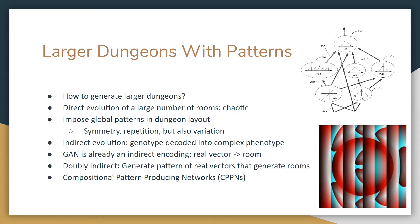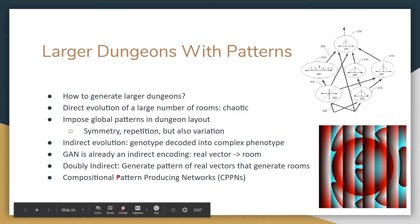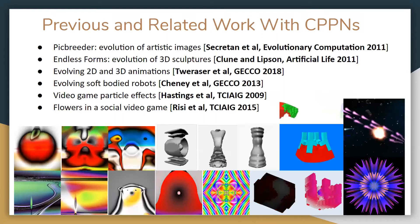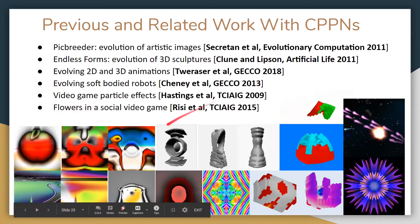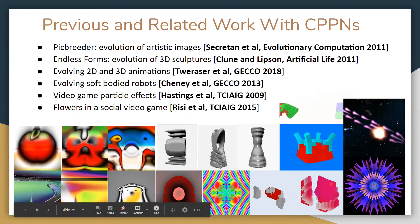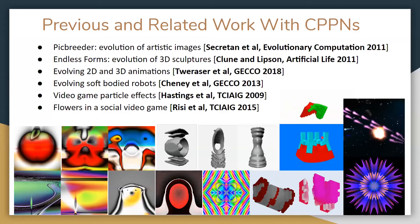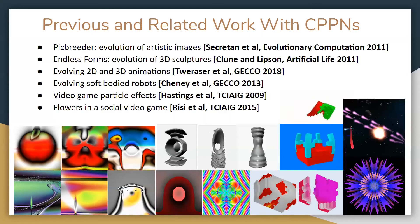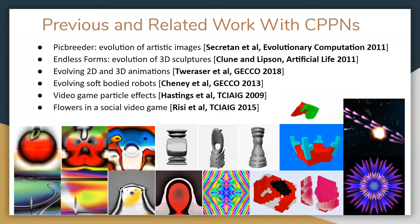What we added was indirectly evolving the latent vectors — an extra level of indirection, giving us a doubly indirect encoding. The way we indirectly evolved those latent vectors was using compositional pattern-producing networks (CPPNs). These have been around for a while. Cool things done with them include 2D images, 3D shapes, 2D and 3D animations, soft-bodied robots that exhibit interesting behaviors, firing patterns in a space-based video game, and artistic patterns for a social flower-trading game. CPPNs are a really cool way of doing things.